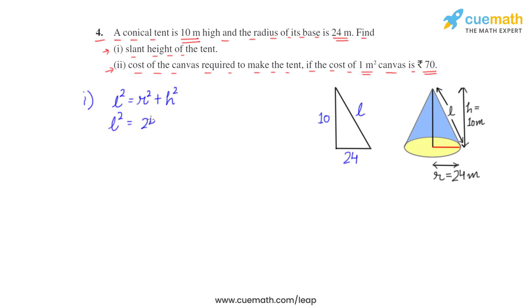Now let's substitute the values. l square is equal to 24 square plus 10 square. This becomes equal to 576 plus 100 which is nothing but 676. So to find the value of l we have to take square root on both sides. It means l is equal to 26 meters. So it means the slant height of this tent becomes 26 meters.